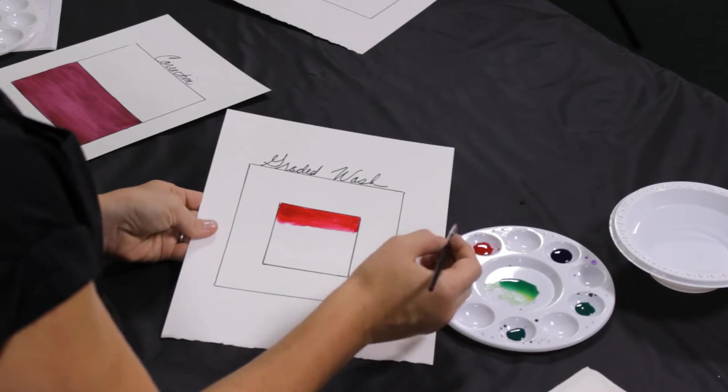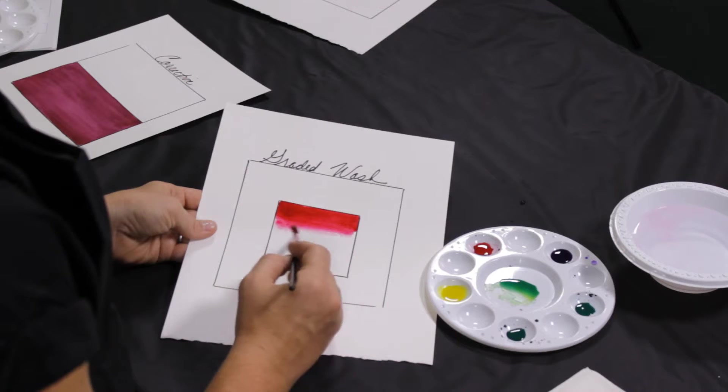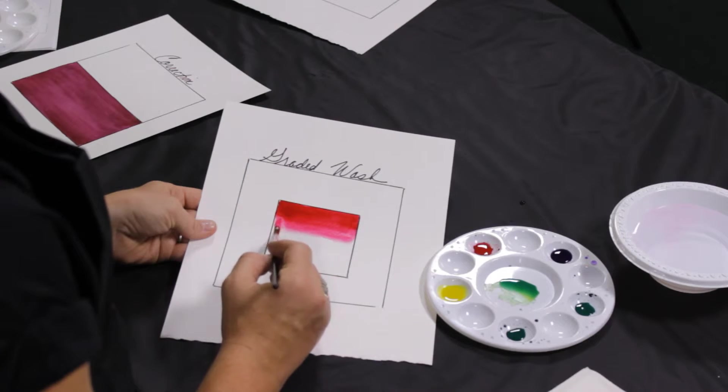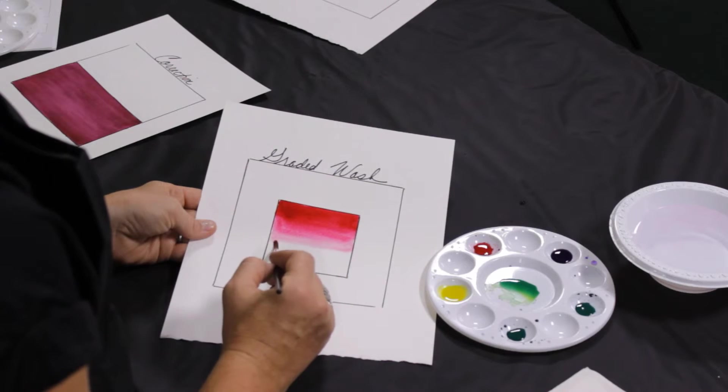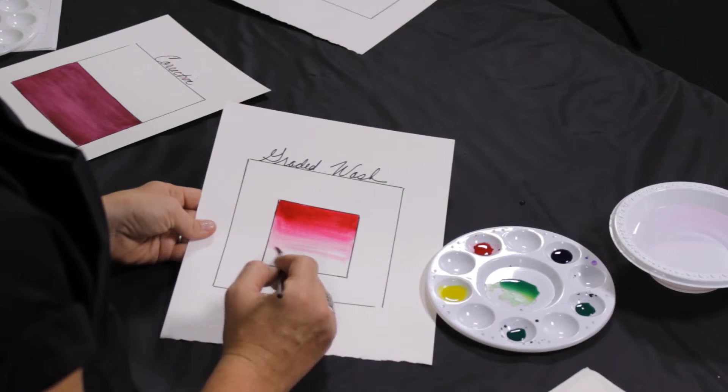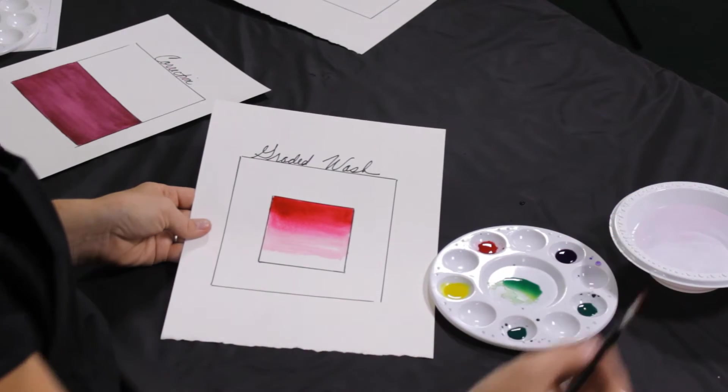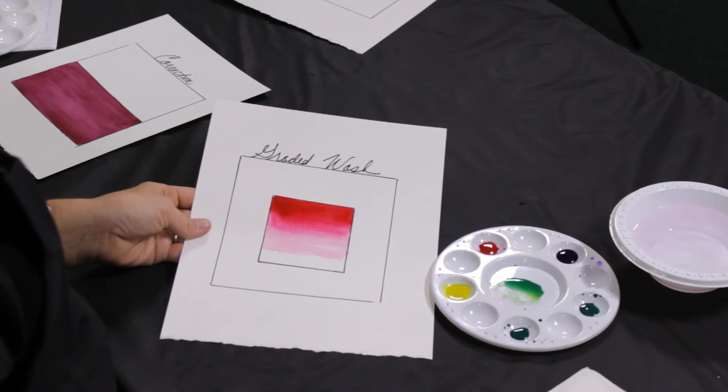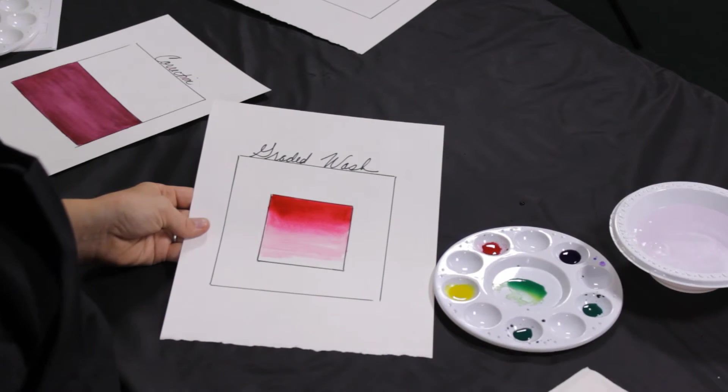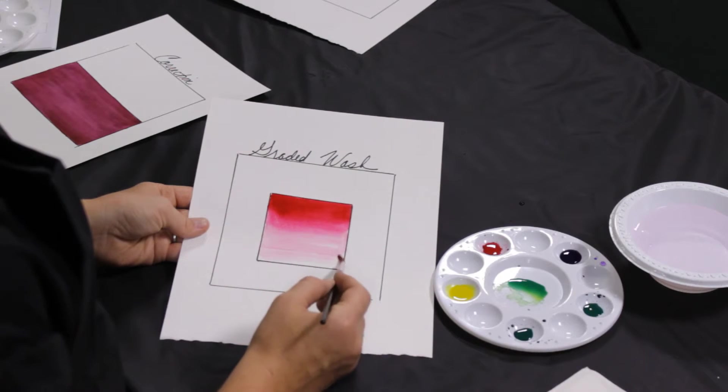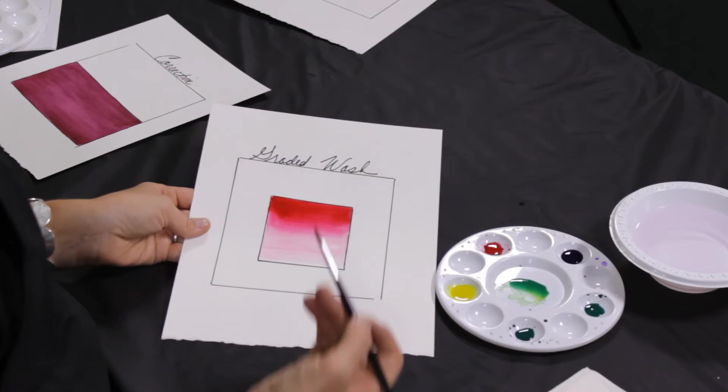So instead of reloading my brush this time, I'm going to take a little bit of paint off and pull the paint down with a little bit of water. I didn't apply new paint. I'm just pulling it down so that it slowly grades. And if you notice, I'm tilting my paper too. When I get to the bottom, I want it to grade out to white, so I'm going to clean the brush off completely, dab it on the paper towel, and just pull the color down. Okay, so this is a graded wash. You can either grade it down to white or you can grade it into another color.